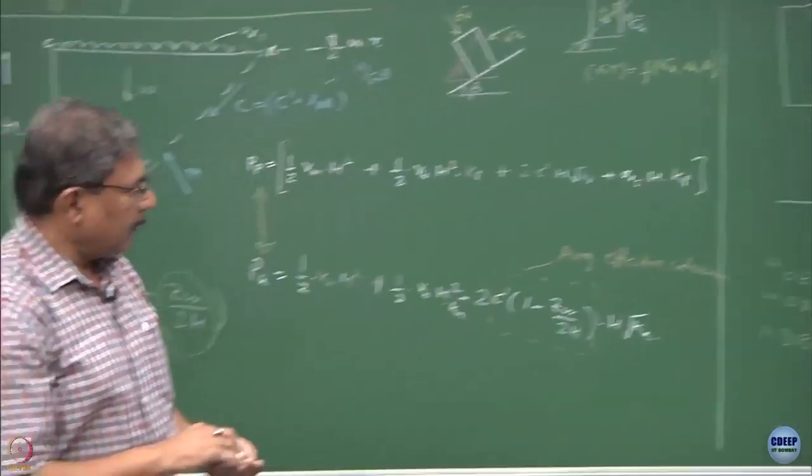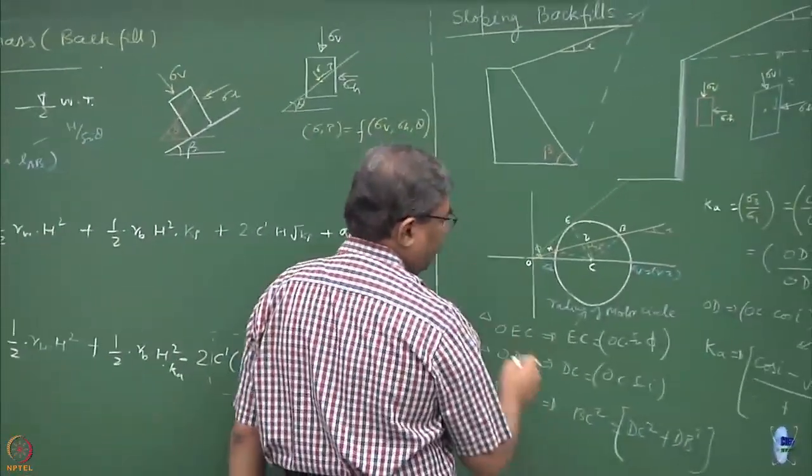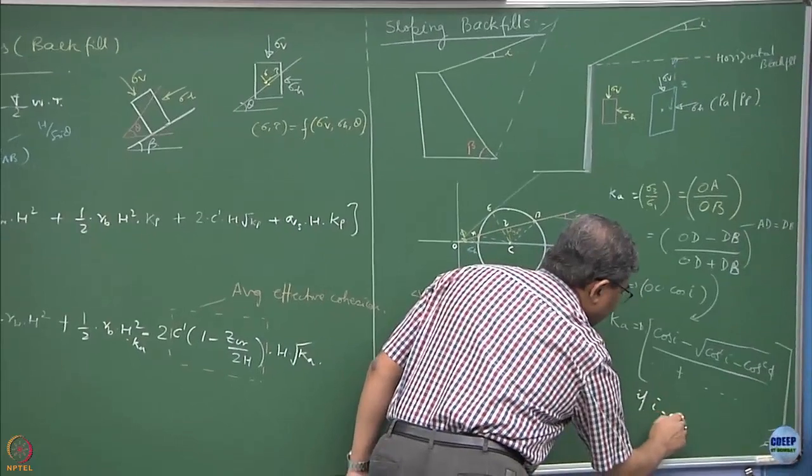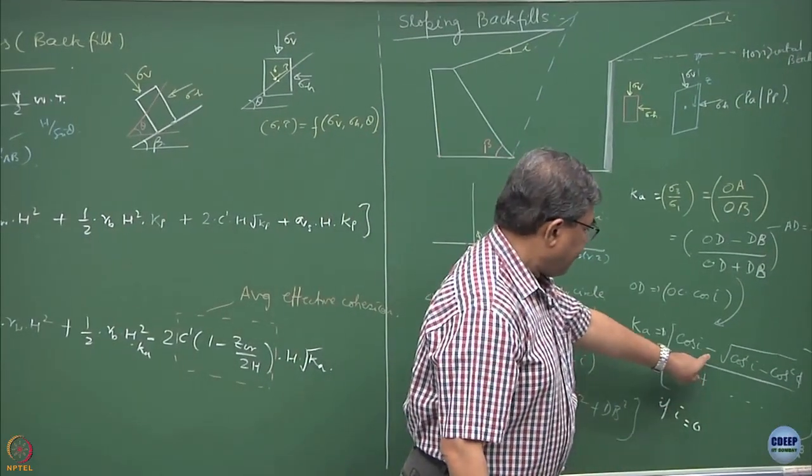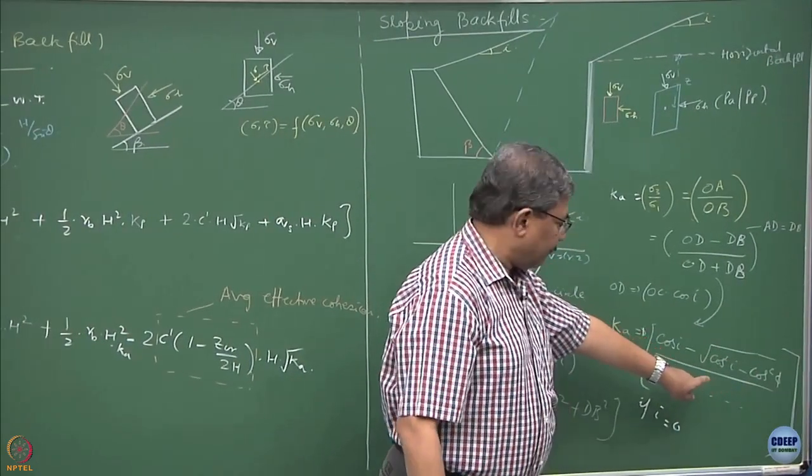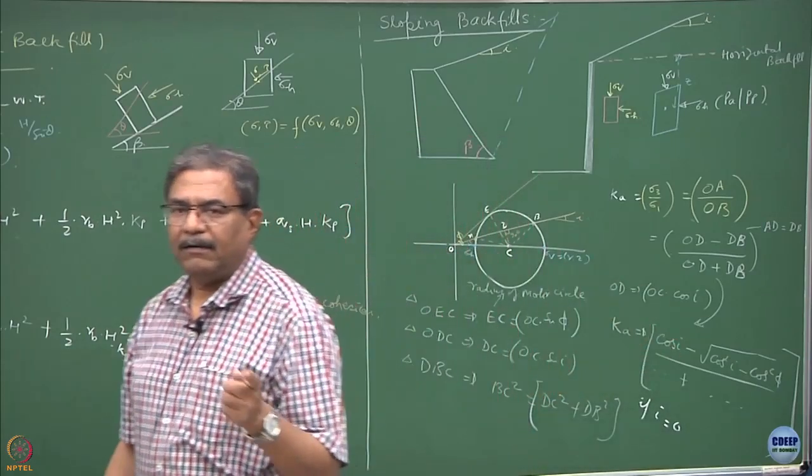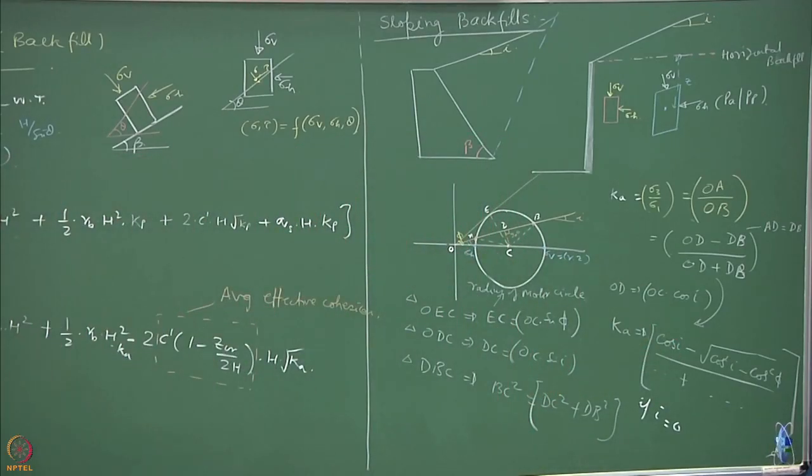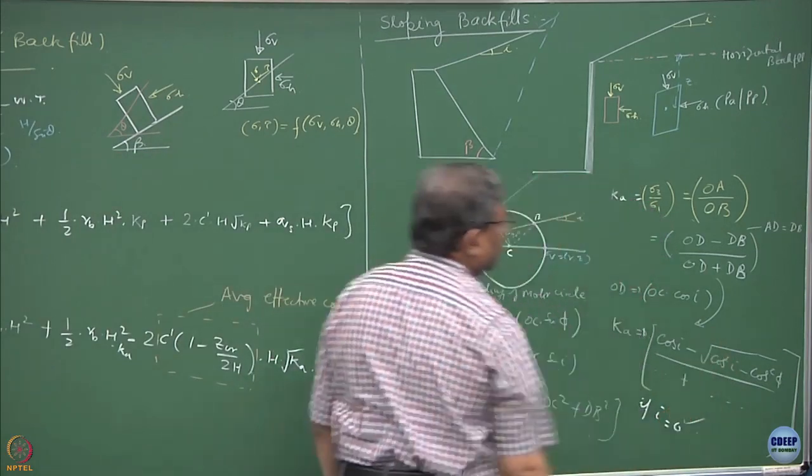Now let us check it quickly, if i is 0, what is going to happen? This will be 1 minus cos square phi over 1 minus cos square phi. This becomes cos of 0 is 1, 1 minus sin phi over 1 plus sin phi. So that means whatever we have derived is alright.